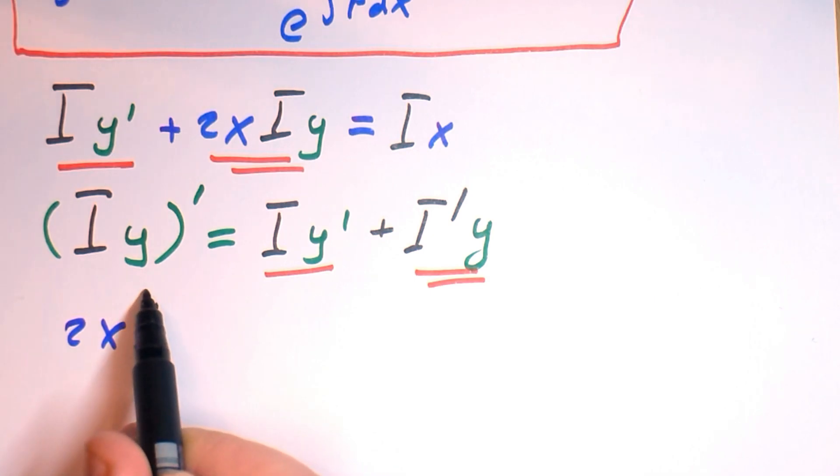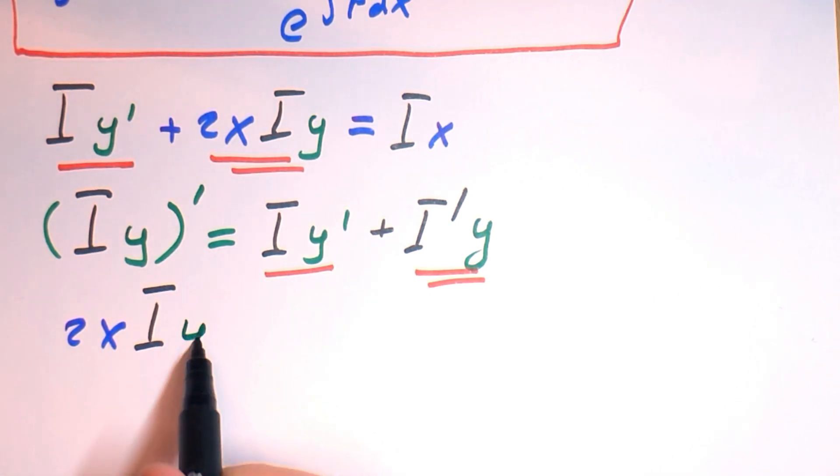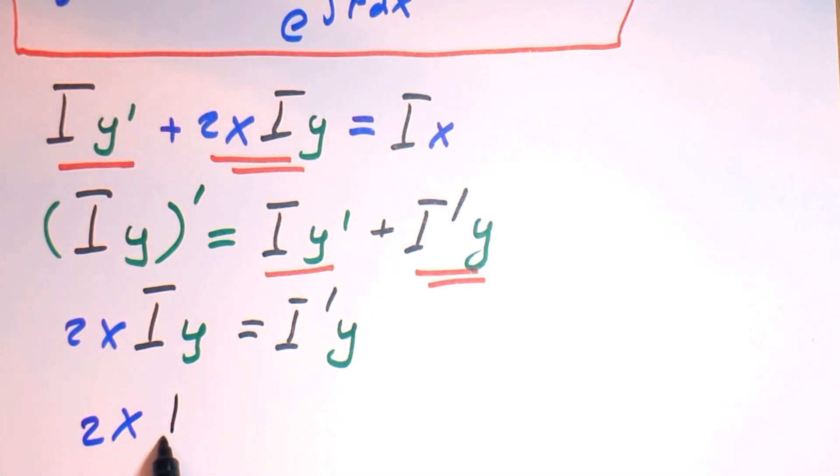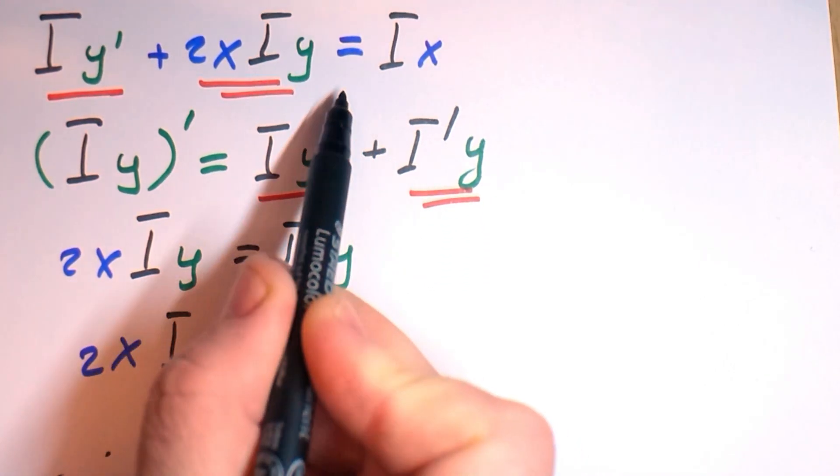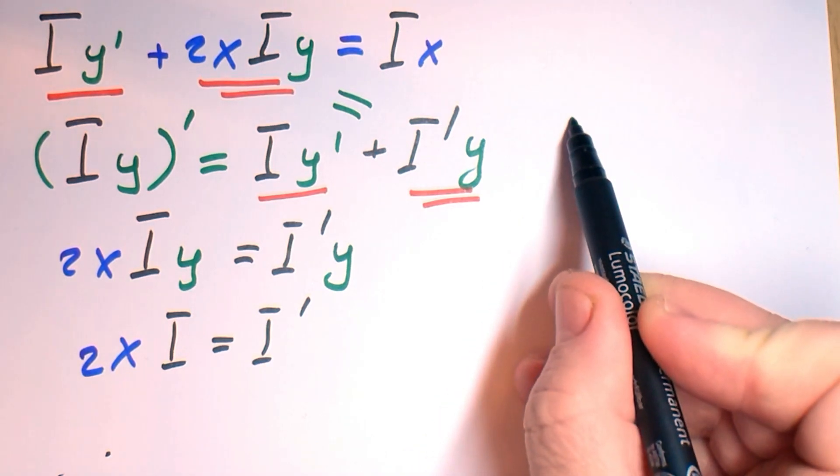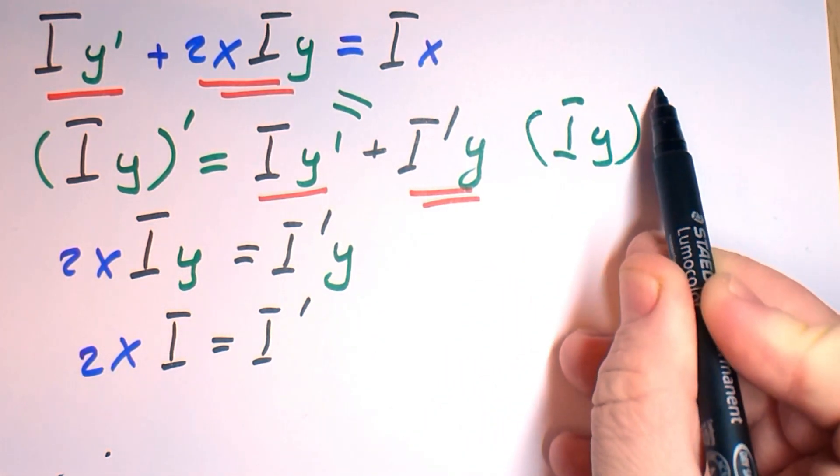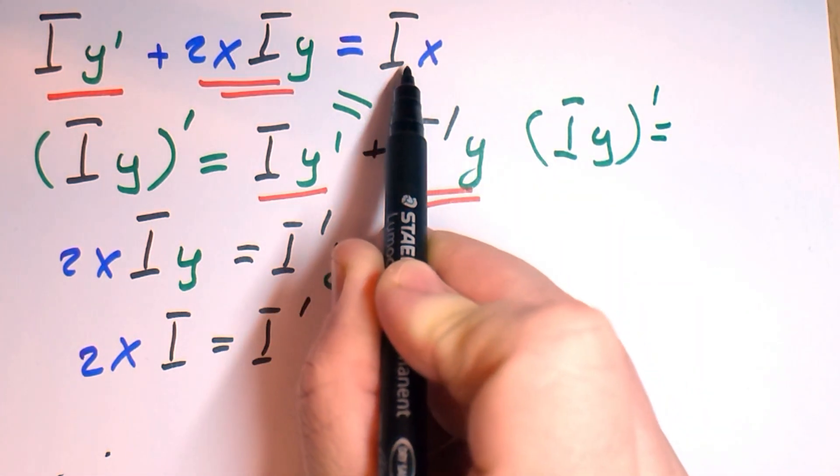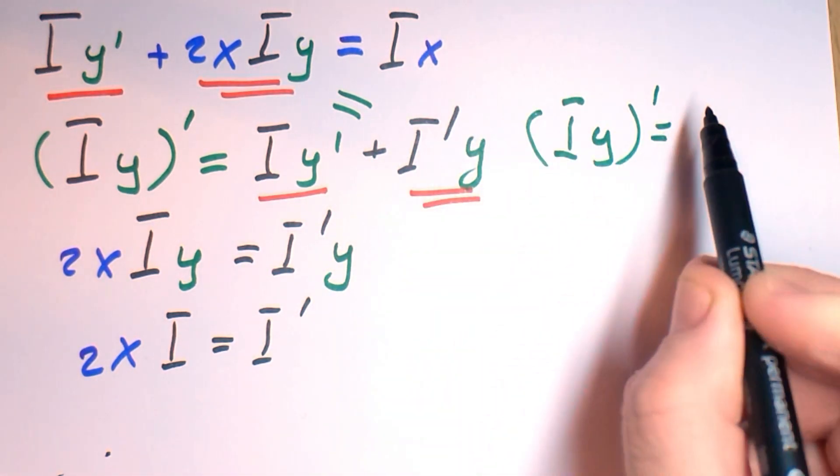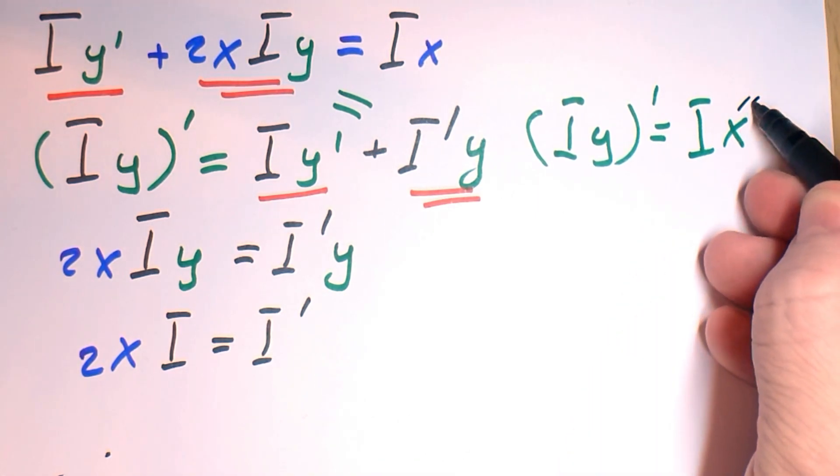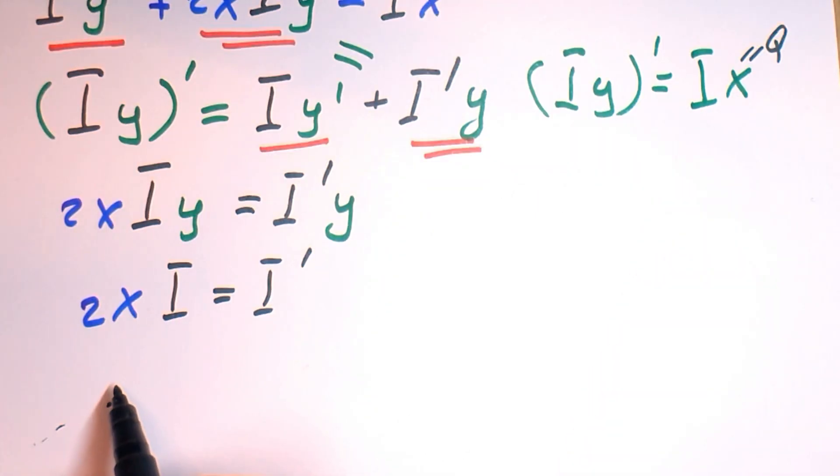So the first component should be equal and the second component we require to be equal. From the second requirement we can say that 2xI equals I'. And if we make these two components equal, then (Iy)' equals Ix. So you remember that x is our q. Let's find I.